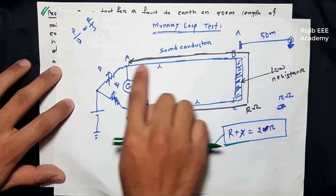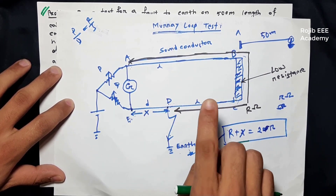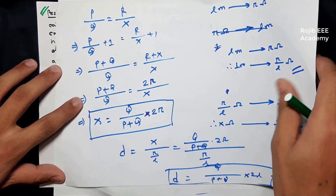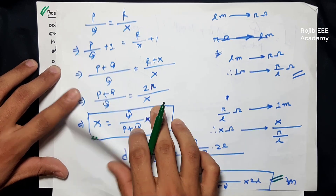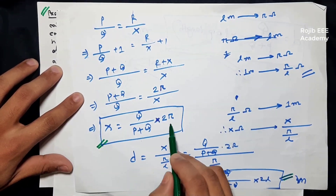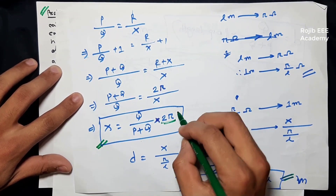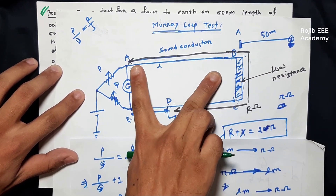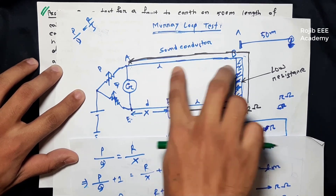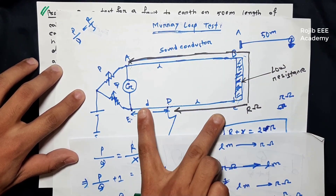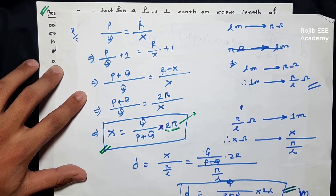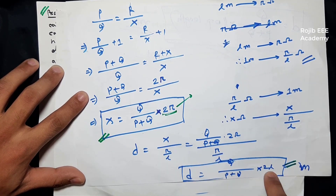The sound conductor length is L, and the fault conductor length is also L, so the total loop length is 2L. The loop resistance calculation: A-to-go resistance value is Q by P plus Q times 2, which means 2R. 2R means loop resistance. A-to-go resistance is R. So total loop resistance is 2R. We have a calculation of Q by P plus Q into 2L, where 2L is the loop length.